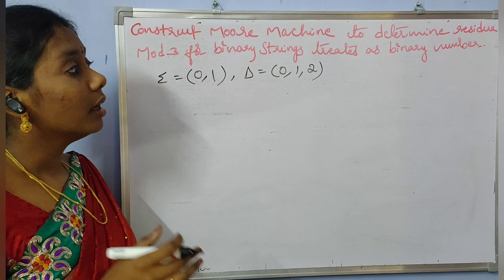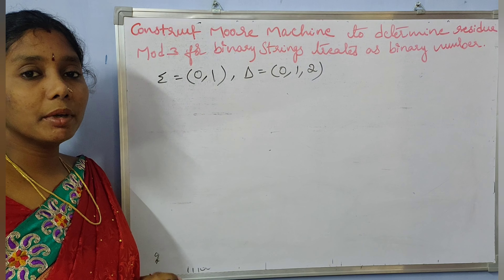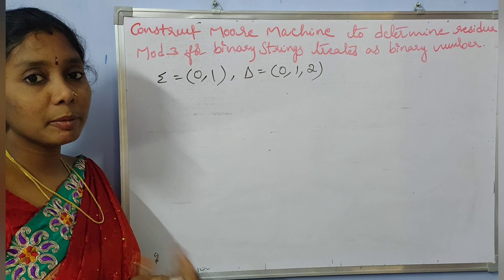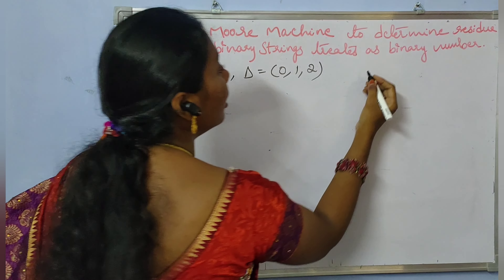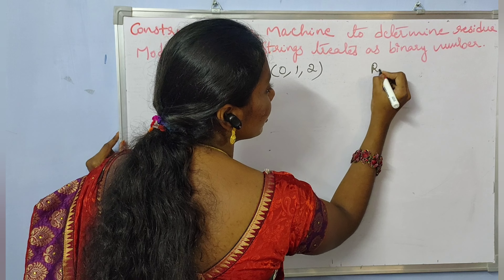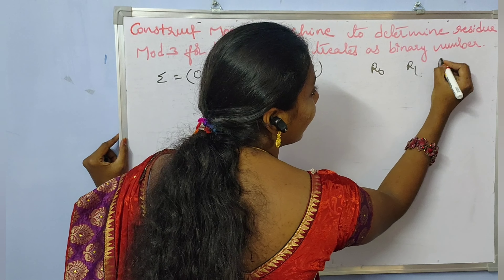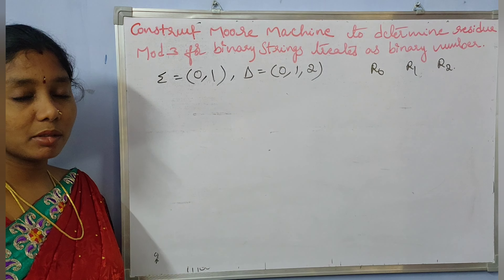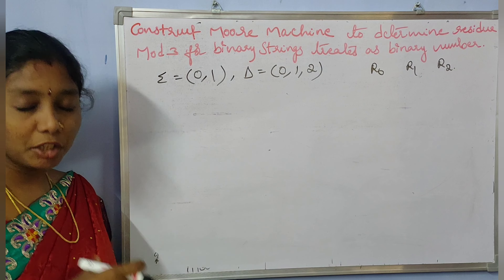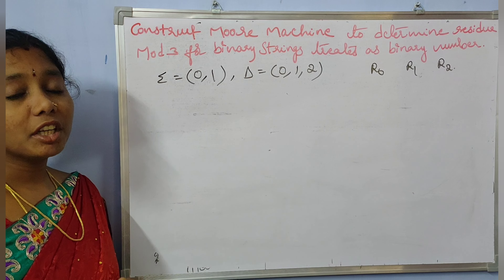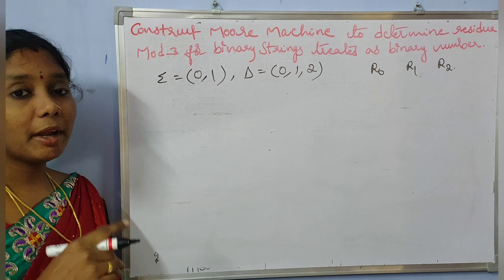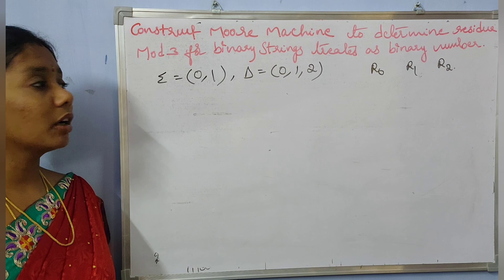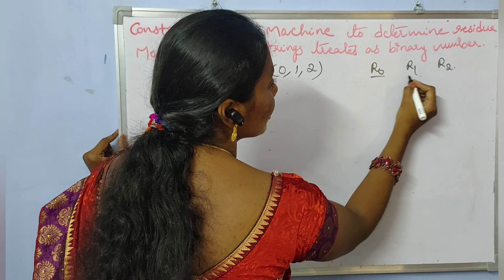So this is a binary number. We consider three conditions based on divisibility by three: the first case is remainder 0, the second case is remainder 1, and the third case is remainder 2. A number belongs to one of these three categories.